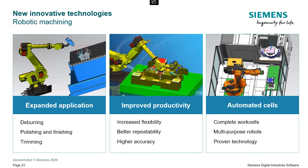SimSolid drastically reduces time for preparation and pre-processing of simulation. Automated bonded connections between contact regions reduce preparation time. The new technology uses the original geometry that you import into the software, which reduces solver run time without loss of result accuracy. Total time for the full simulation process is significantly shorter.